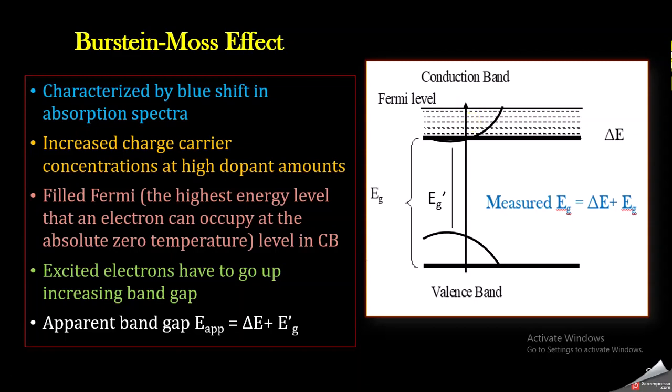This increase in the band gap is represented in the absorption spectrum as a blue shift at higher dopant levels. This blue shift is called the Burstein-Moss effect. It occurs at higher dopant concentrations and is characterized by an increase in the band gap of the material.